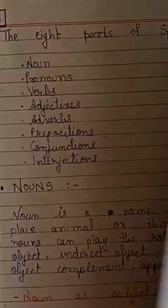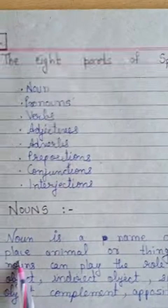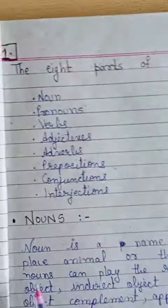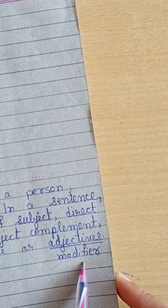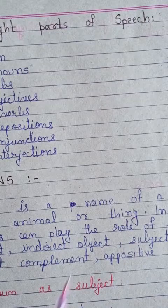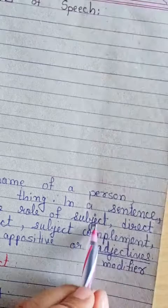A noun is the name of a person, place, animal, or thing. In a sentence, a noun can play the role of subject, direct object, indirect object, subject complement, object complement, appositive, or adjective (modifier). We know that any proper name we speak is a noun. Now let's see how it plays the role of each of these, starting with noun as subject.